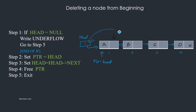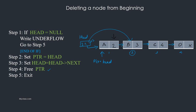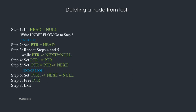The head currently points to node one. After deleting the first node, head should point to node two. So we update head equal to head next, which moves head to the second node. Now the first node is free, and we can free ptr to reallocate that memory. This completes the steps to delete a node from the beginning.